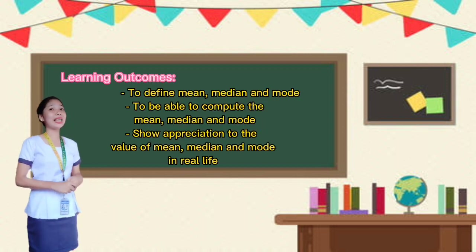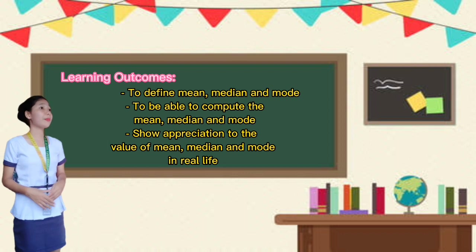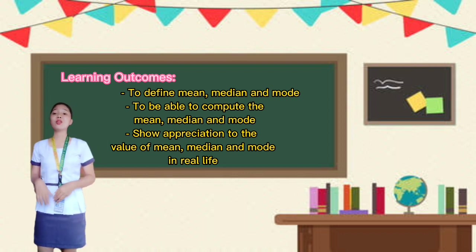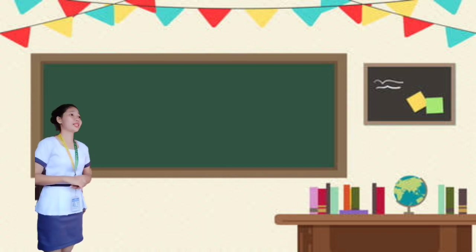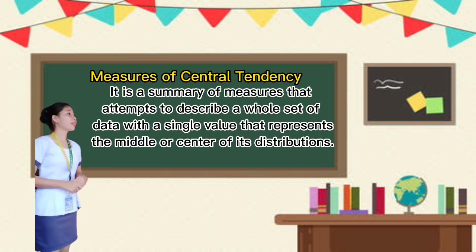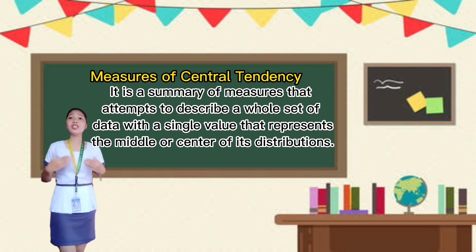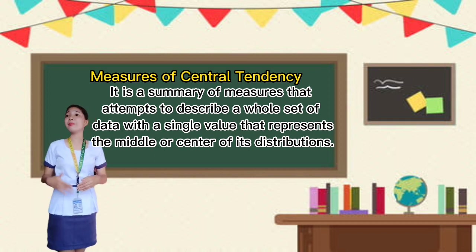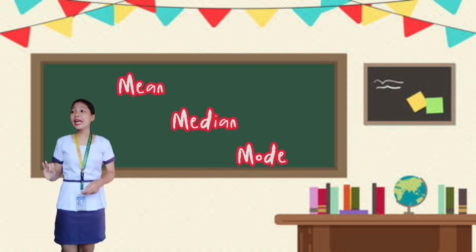Our learning outcomes for today are: one, to define mean, median, and mode; two, to be able to compute the mean, median, and mode; and three, to show appreciation for the value of mean, median, and mode in real life. Now, what are measures of central tendency? Measures of central tendency is a summary measure that attempts to describe the whole set of data with a single value that represents the middle or center of its distribution.